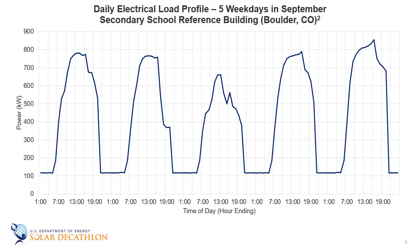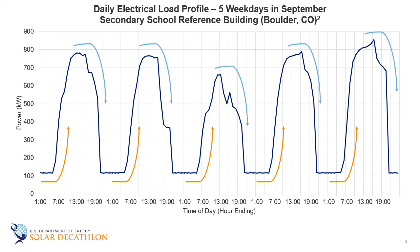Let's start by showing an example of a secondary school building in Boulder, Colorado. This graph is called a load profile, and it shows the hour-by-hour electricity usage in this building over a handful of days — specifically, five weekdays in September. Notice how the building's electricity use ramps up during the daytime hours when the school is occupied. Then, as the school day ends and people go home for the night, electricity use decreases to a pretty steady overnight baseload of around 100 kilowatts.